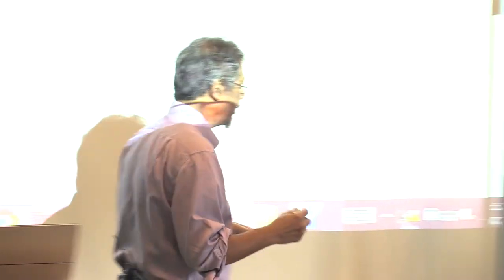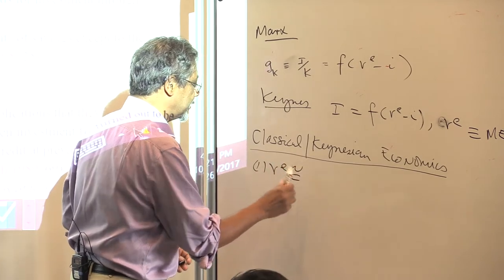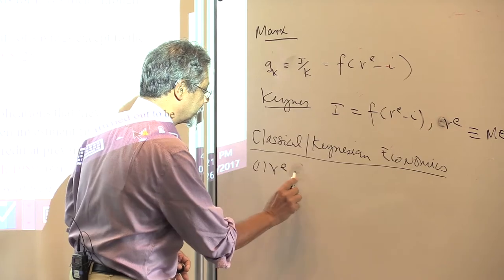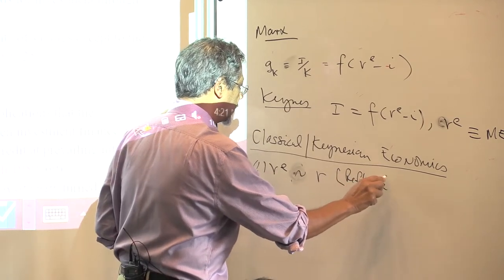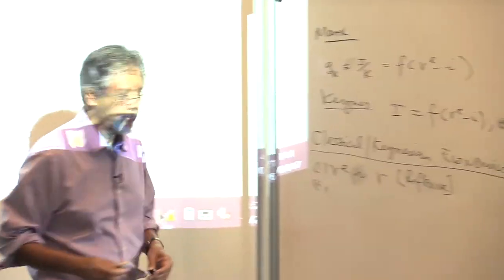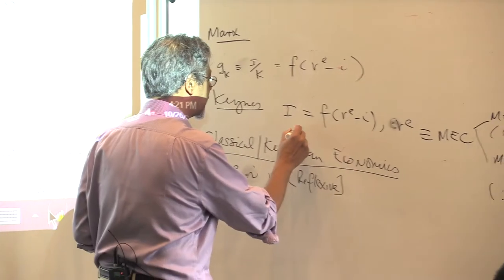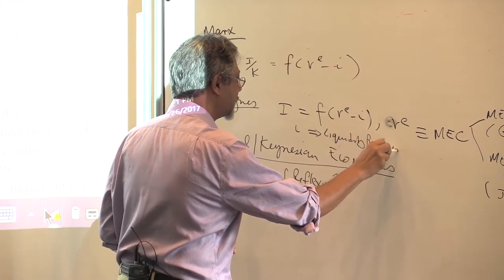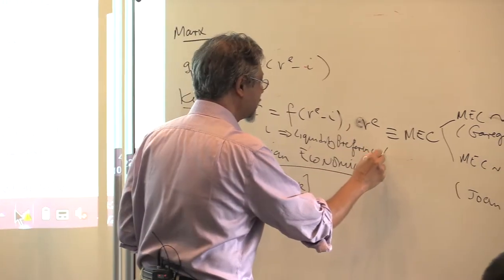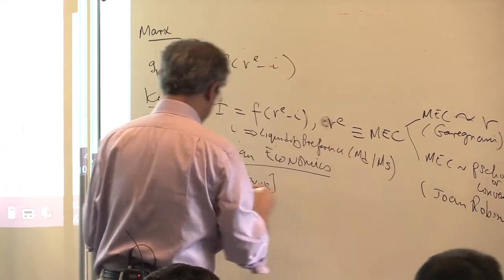The first element of classical Keynesian political economy: the expected rate of return is linked to the actual rate of return in a reflexive sense. The second point: in Keynes, the interest rate is dependent on liquidity preference — money demand versus money supply — which makes it psychological and subjective. This is not necessarily wrong, but the way Keynes poses it, the demand for money comes only from personal subjective things, which is very neoclassical.